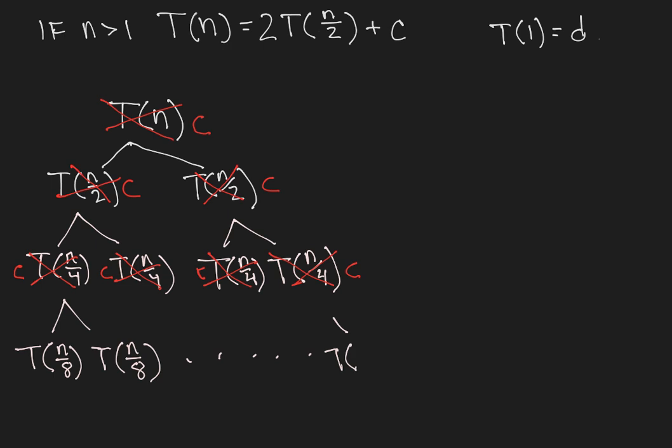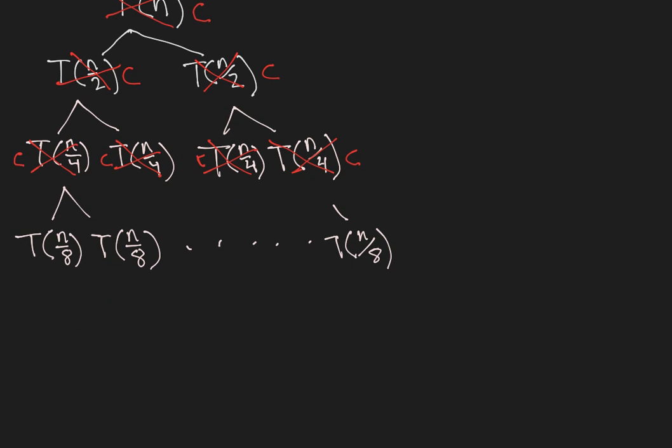You know, there's no sense in expanding this further. But we can imagine what's going to happen as we build this tree. What eventually will occur is we're going to get down to t of 1, which we know is just d.